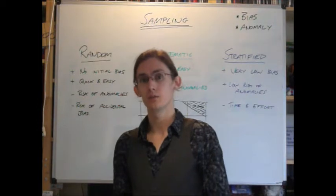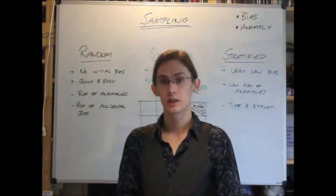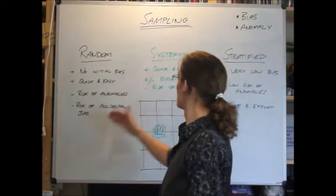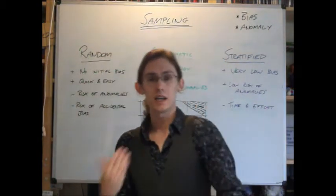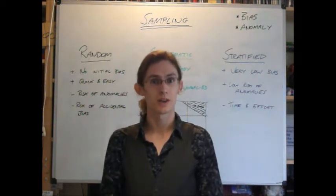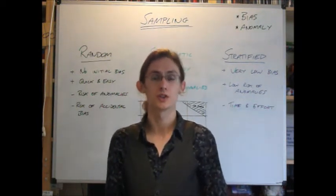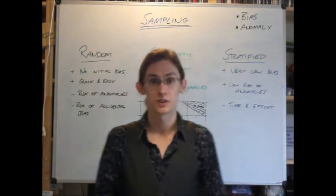We have three main approaches that we look at when we're sampling, which are random, systematic and stratified sampling. Each has benefits and drawbacks and each has a best use application, so somewhere where you can use it best over every other type.